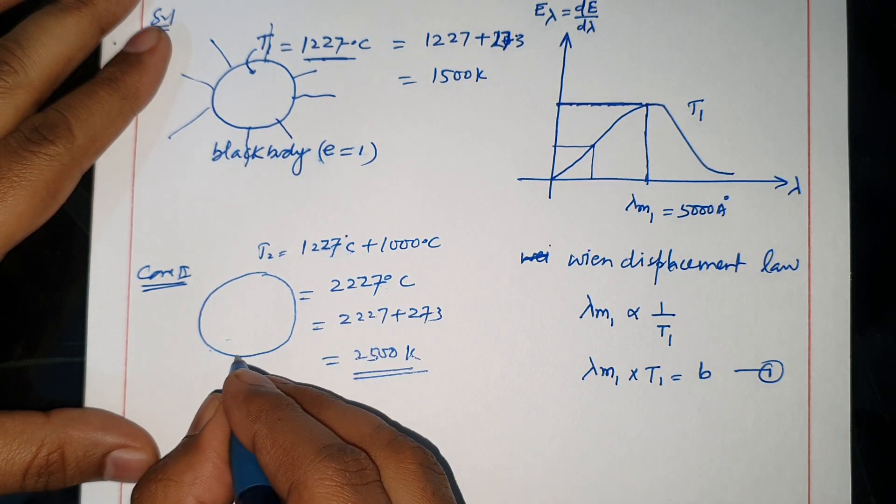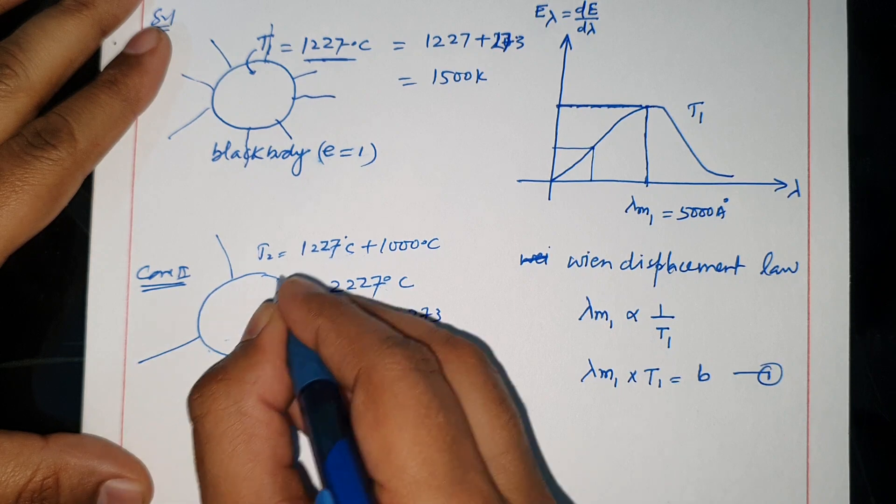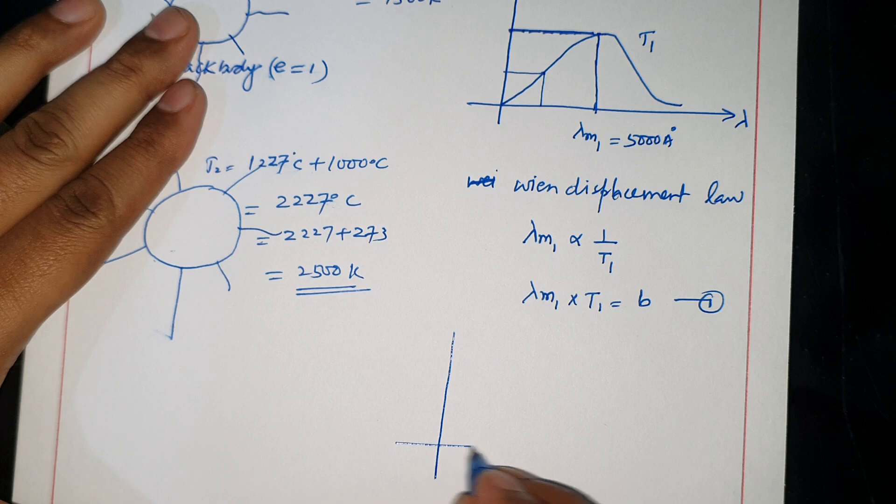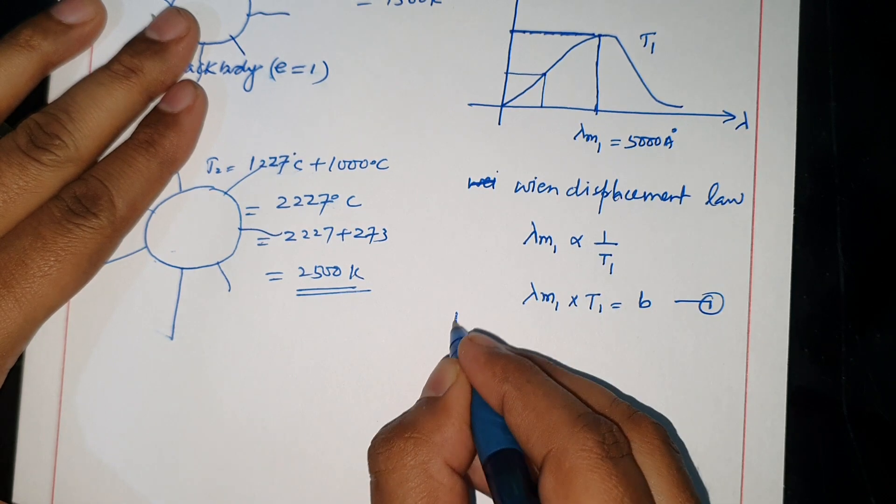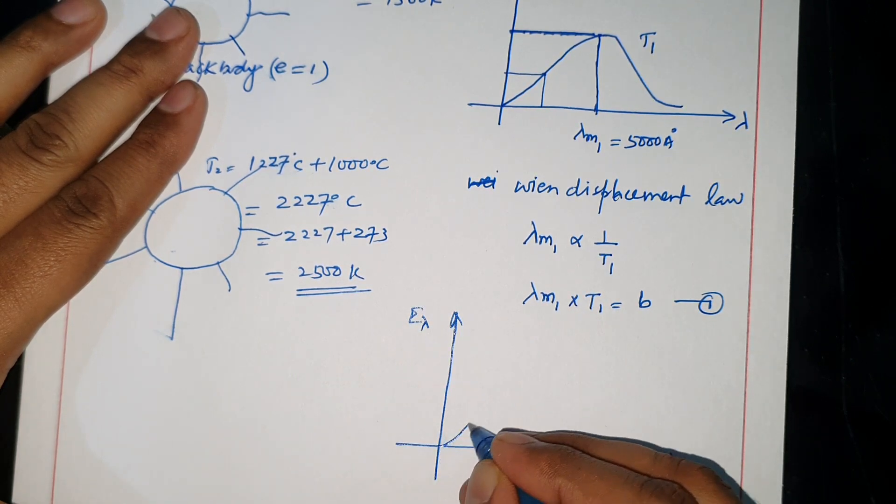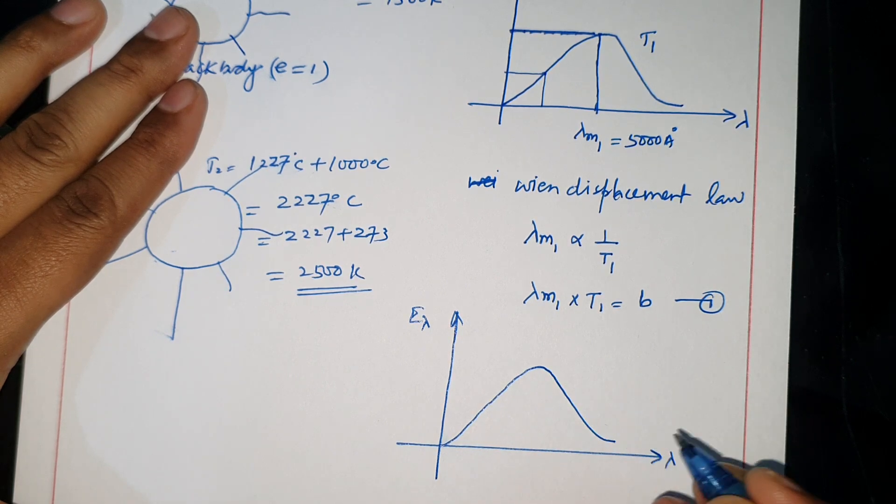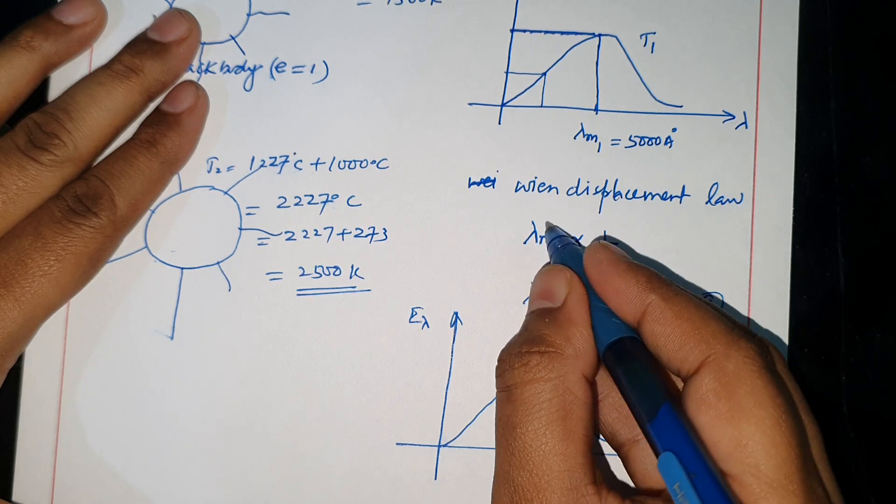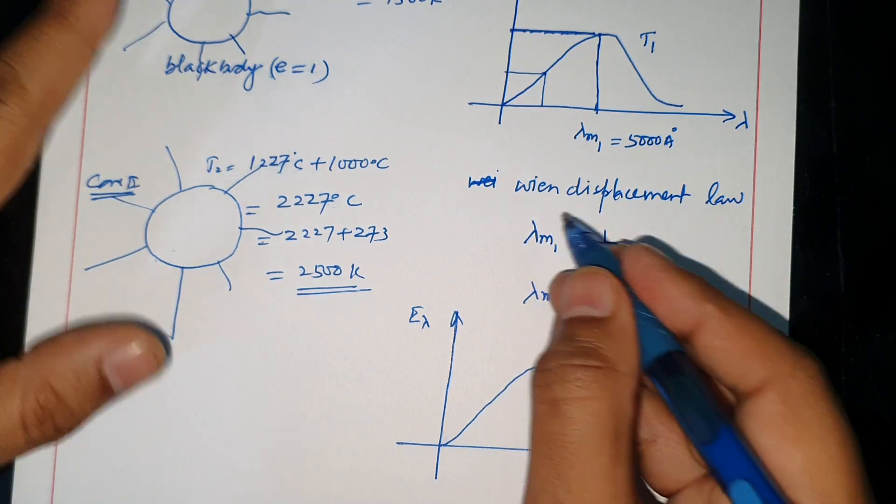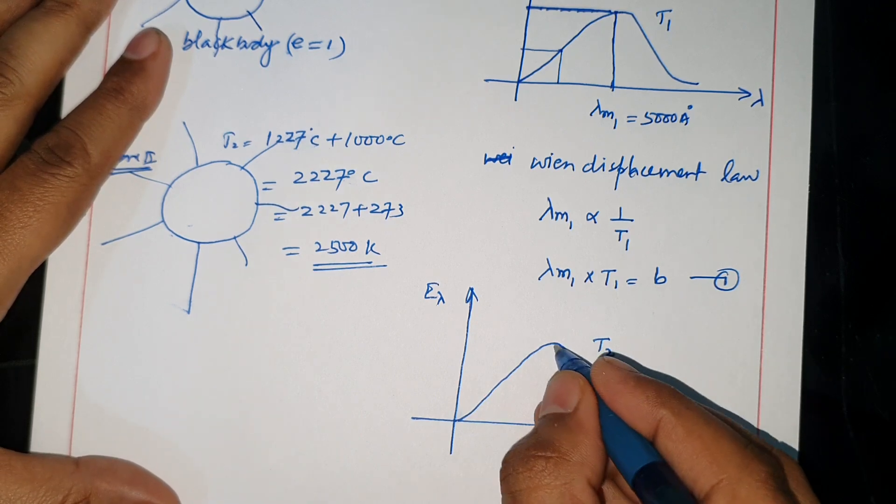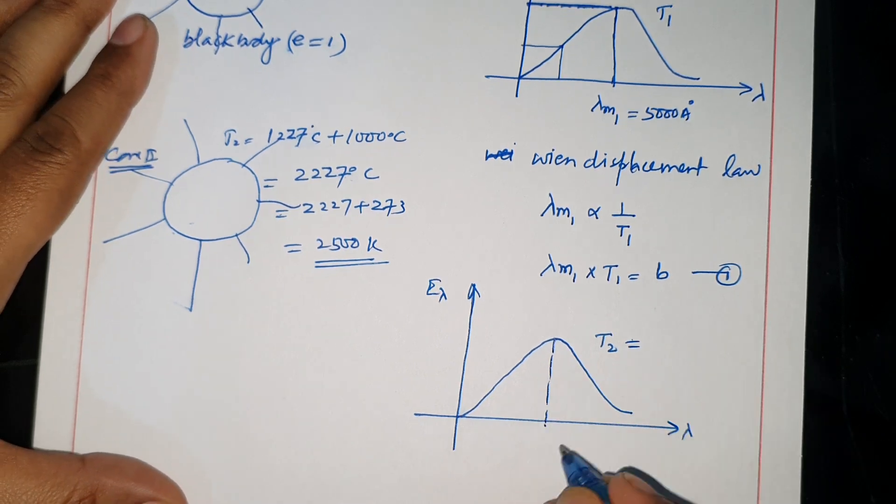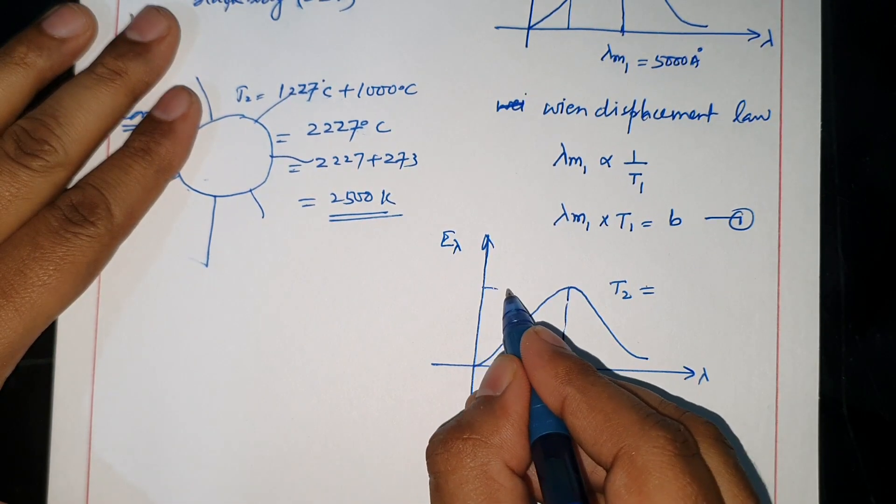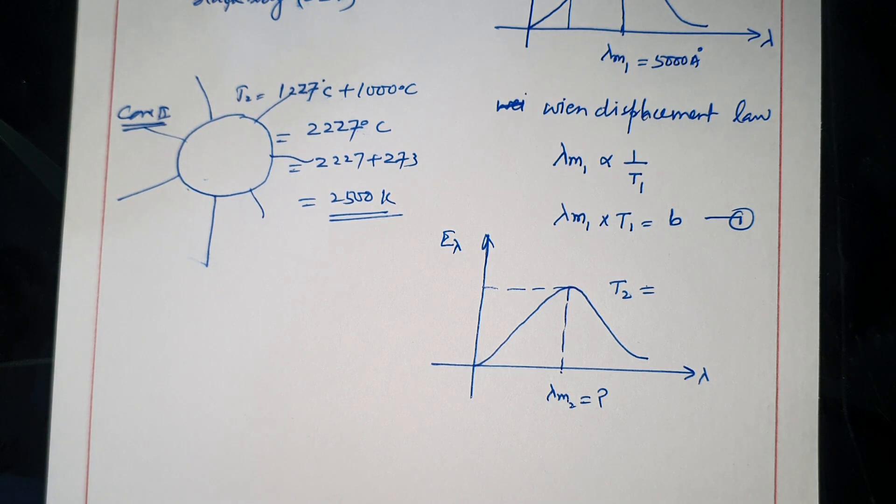Now we are asking: at what wavelength will maximum intensity be observed? This is the second case. When we increase the temperature, the wavelength will be reduced.